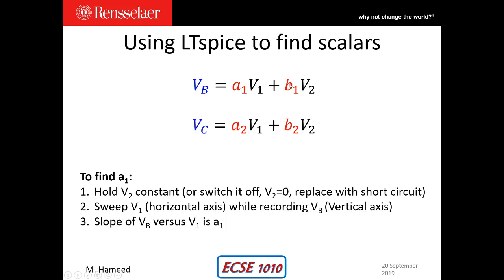In the same manner, to find B1, I would make V1 zero or a constant and then change V2 and observe it on the horizontal axis, look at VB on the y-axis, and the slope of that line would give me B1. Similarly, I can find the two other constants A2 and B2.